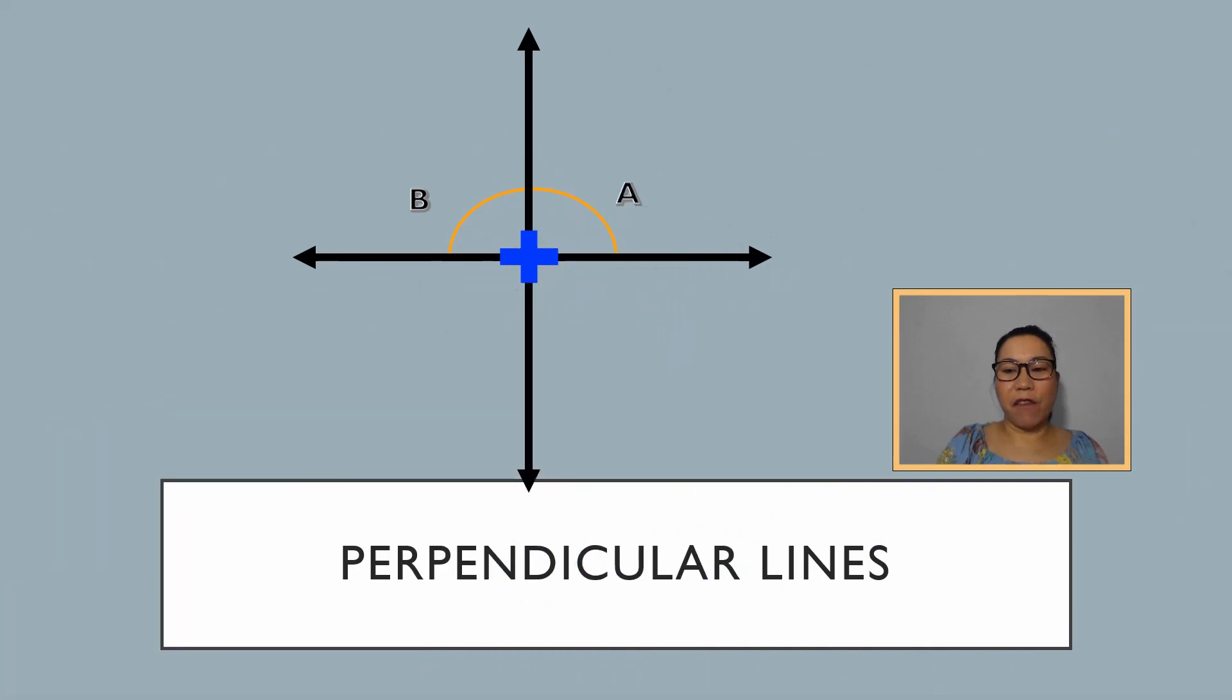Now, if I arrange these two lines in this form, it seems that in the middle of it, you can see a form of plus sign. These lines are what we call perpendicular lines.